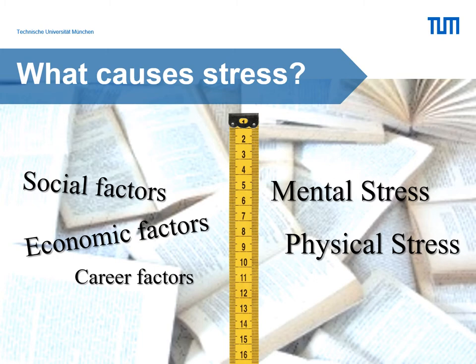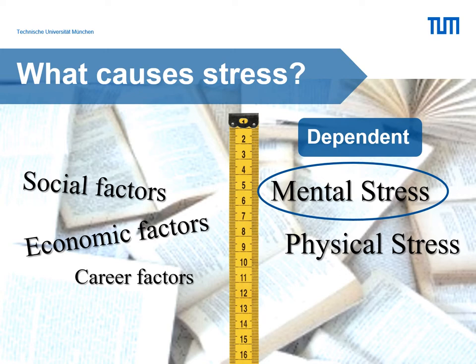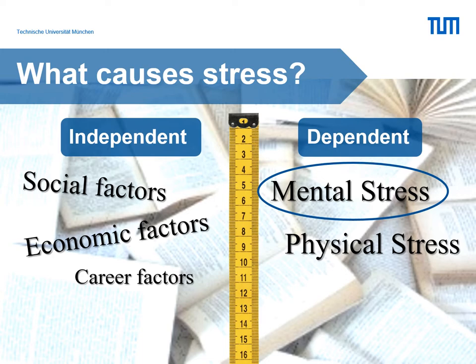At this point you will be recognizing that some variables depend on others. In our example, mental stress depends on social factors. In other words, mental stress will be a dependent variable because it depends on social factors. These social factors will be an independent variable — they are the ones you can control in order to explain variation in the dependent variable.